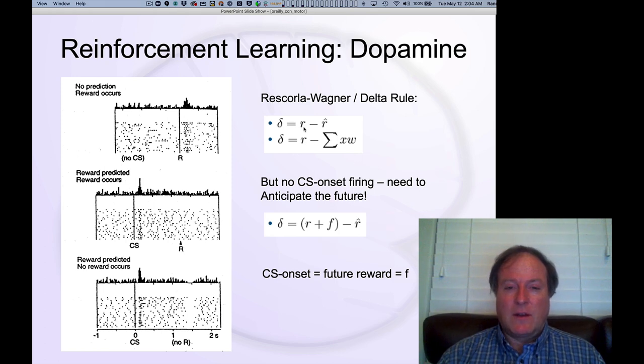And we can go back originally to the Rescorla-Wagner learning rule as the original foundation for these ideas. And this is really the same thing as the delta rule that we looked at in the error-driven learning chapter. And you should definitely recognize that dopamine is reward prediction error. It's just an error-driven kind of signal.